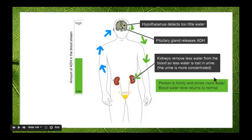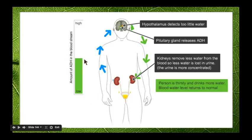When a person is thirsty and drinks more water, that helps to increase the amount of water in the blood, as well as the reduction in urine output, and then everything returns to normal with ADH levels stabilizing.